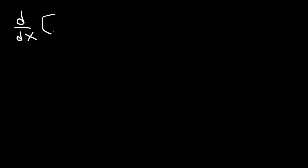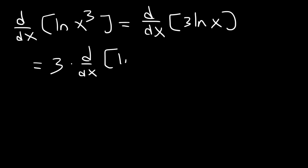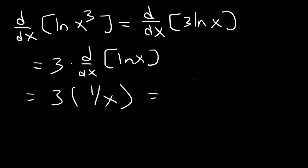Go ahead and try this one: find the derivative of ln x cubed. Let's rewrite the expression first — this is 3 ln x. So that's going to be 3 times the derivative of ln x. And the derivative of ln x is 1 over x, so this is just going to be 3 divided by x.